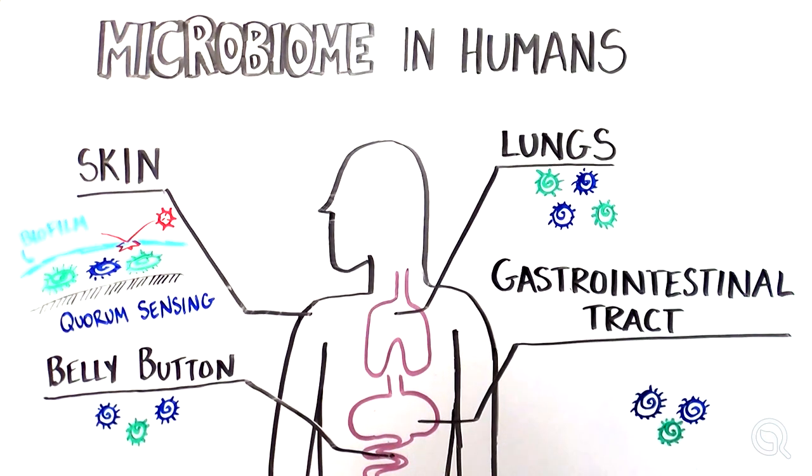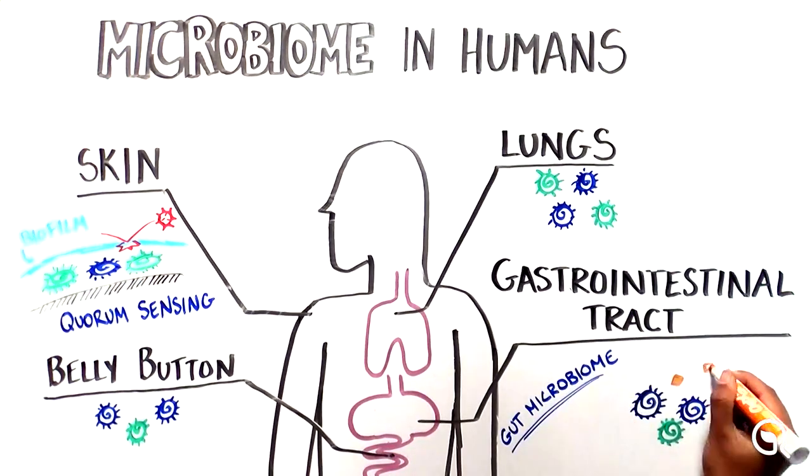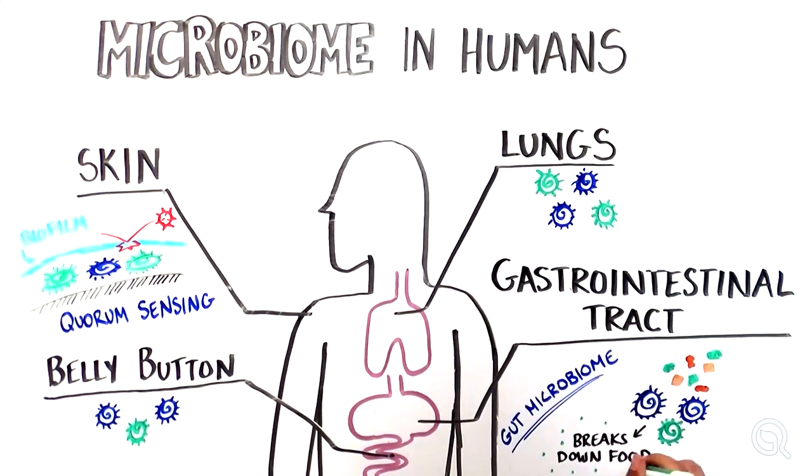The most well-known microbiome in the human body, however, is the community of microbes that live in our digestive tracts, the gut microbiome. Here, the microbes primarily help us break down the food that we eat into nutrients that can be absorbed by our body.